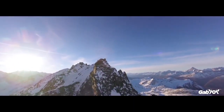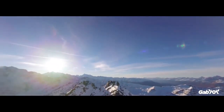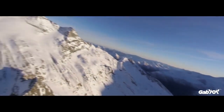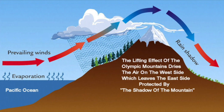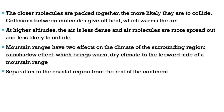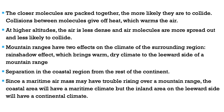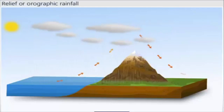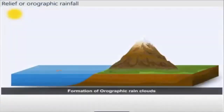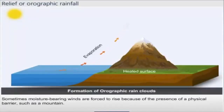Mountain ranges have two main effects on climate. The first is the creation of a rain shadow, which brings a warm, dry climate to the leeward side of the mountain range, while the windward side receives a lot more rain. The second effect is the separation between coastal regions and the inland area. Maritime air may have trouble rising over a mountain range, so the coastal area has a maritime climate while the inland leeward side has a continental climate.